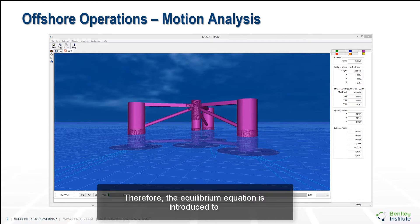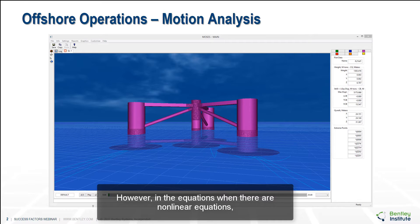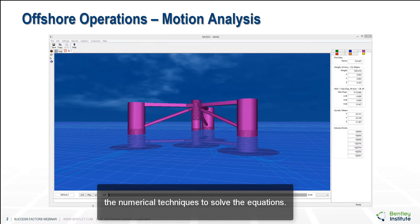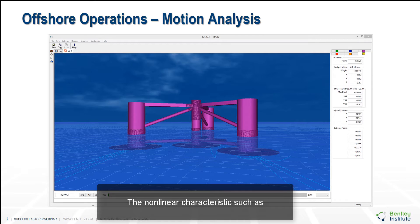Therefore, the equilibrium equation is introduced to suit the problem physically and stationary condition. However, in the equations when there are non-linear equations, the numerical problem will come up and we require numerical techniques to solve the equations. The non-linear characteristics such as for the catenary mooring lines should be accurately considered in establishing the mean offset by a stable equilibrium position.